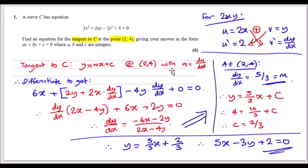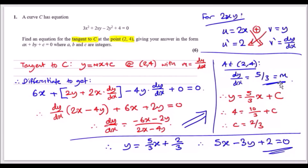Now collect the dy/dx terms, make dy/dx the subject by moving everything else to the other side, then plug in x = 2 and y = 4. When you do that, you should get a gradient of 5/3. That is our m value.